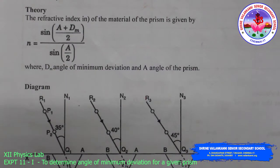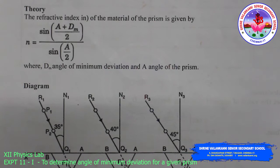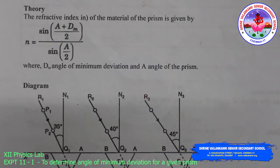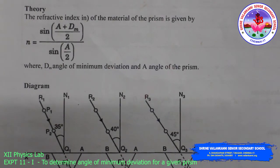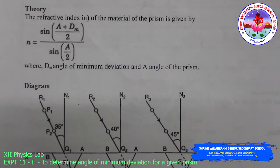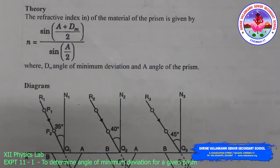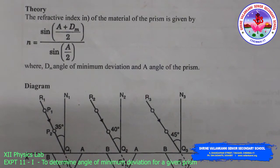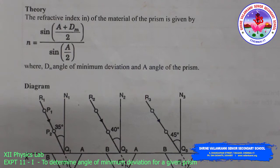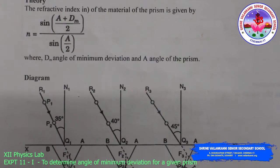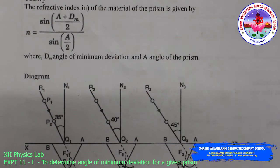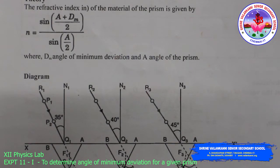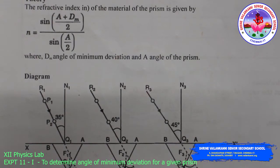Theory. The refractive index of the material of the prism is given by n = sin((A + dm) / 2) divided by sin(A / 2), where dm is the angle of minimum deviation and A is the angle of the prism.